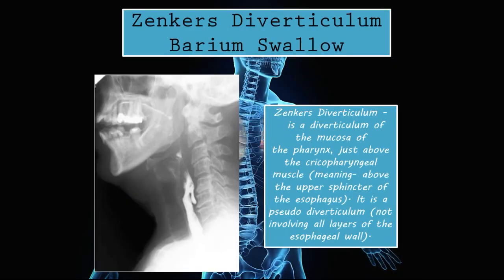Zenker's diverticulum on barium swallow: a Zenker's diverticulum is a diverticulum of the mucosa of the pharynx just above the cricopharyngeal muscle, meaning above the upper sphincter of the esophagus. It is a pseudodiverticulum because it does not involve all the layers of the esophageal wall.